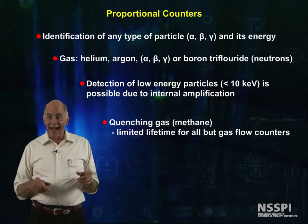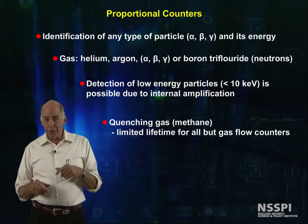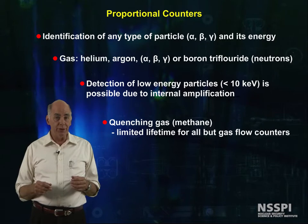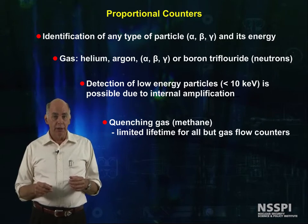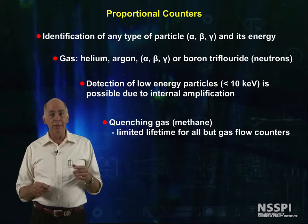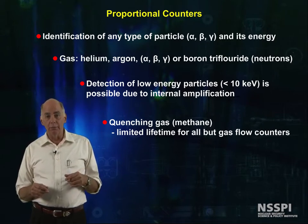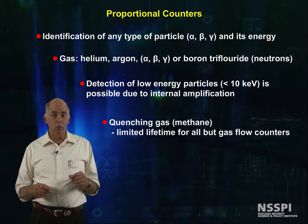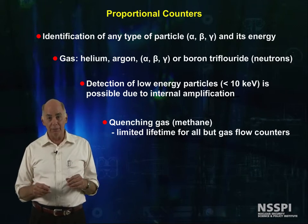To stop a Geiger-Mueller discharge, a quenching gas, often methane, is added to the counting gas. This helps resolution, but limits the lifetime of proportional counters for all except gas flow counters.